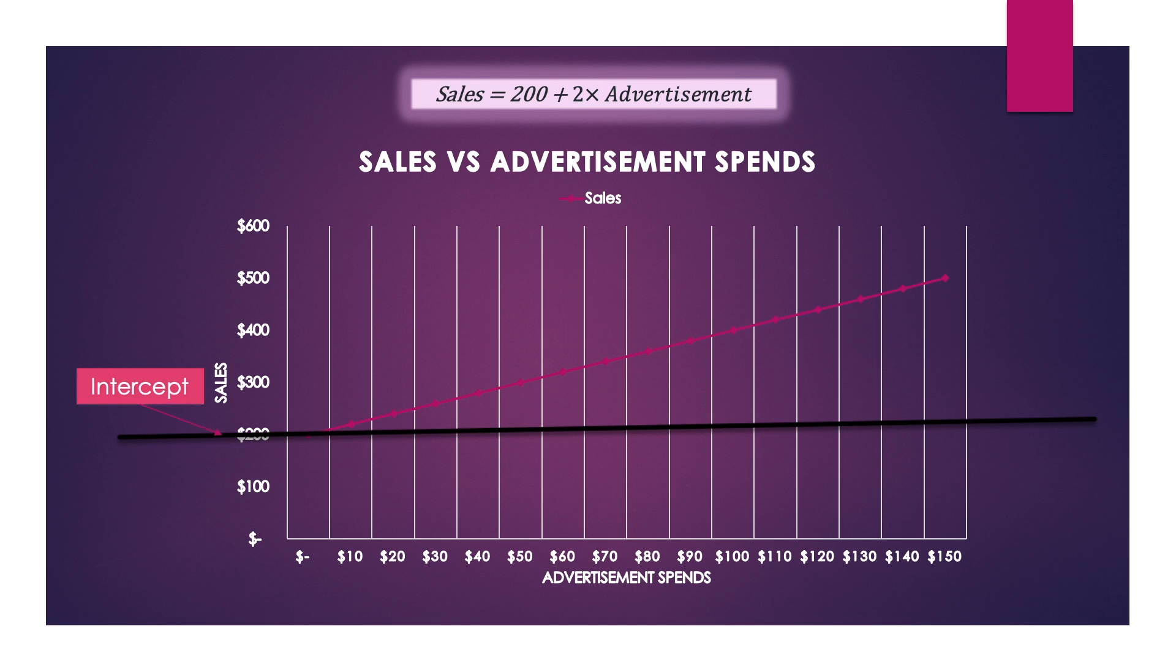And this line is going up with the rate of 2. The straight line that we drew, the pink one, which means that the slope is 2. We also call this slope as coefficient of the variable advertisement spends. In the language of linear regression and statistics, we don't call it slope, we call it coefficient because this is the number that is multiplied with advertisement spends to get predictive sales.